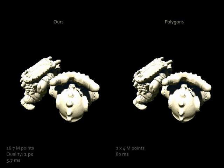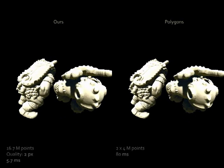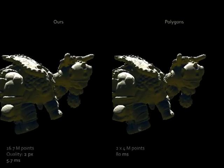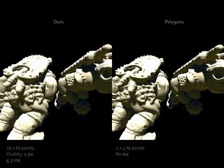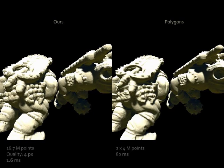With decreasing resolution, the advantage increases. At factor 2, 5.7 milliseconds versus 80 milliseconds. At factor 4, 1.6 milliseconds versus 80 milliseconds.